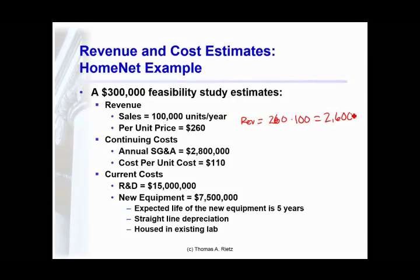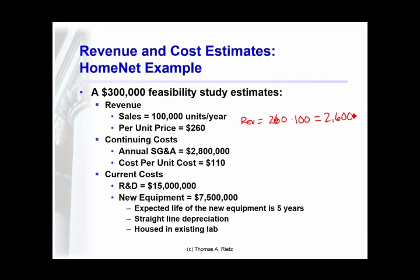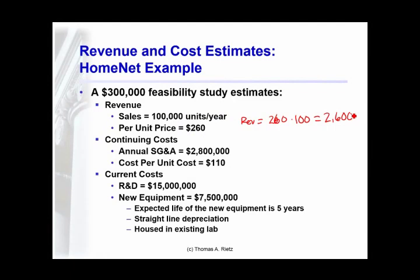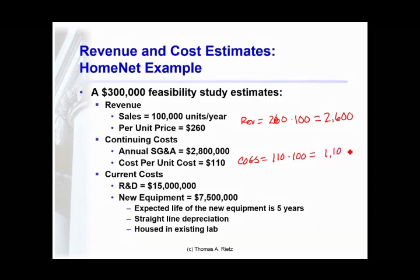It will involve $2.8 million in direct support expenses. If these are truly general expenses that do not change as a result of the project, we shouldn't count them — these are the direct product support expenses for this project. In addition, the production cost per unit for goods sold is $110 times 100,000 units, equaling $1.1 million.